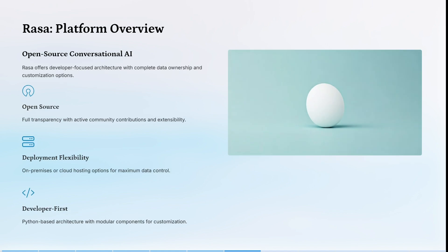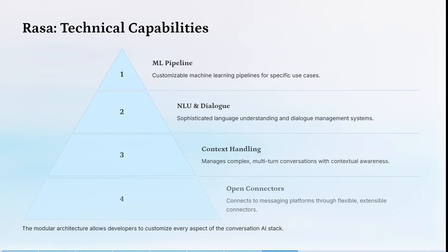Let's have a look at Rasa. Rasa is open source and offers a developer-focused architecture with complete data ownership and customization options. It is fully transparent with active community contributors and extensibility. It has on-premises or cloud hosting options for maximum data control, and it is Python-based with modular components for customization. It has customizable machine learning pipelines for specific use cases, sophisticated language understanding and dialogue management systems, and the capability to manage complex multi-turn conversations with contextual awareness. It connects to messaging platforms through flexible extensive connectors, and the modular architecture allows developers to customize every single aspect of the conversational AI stack.